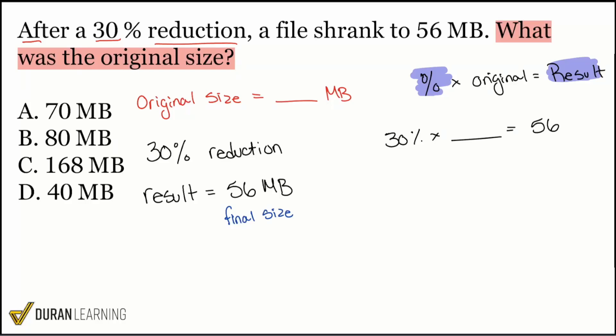Look at what's wrong with this. If I blindly plug in 30% times the original equals the resultant 56 megabytes, look at what's wrong with this, everybody. It's wrong because the 30% represents how much we were reducing by - this is the reduction. Again, we reduced by 30%. And when you look at the 56, everybody, does the 56 represent what we reduced by or what we reduced to?